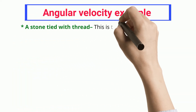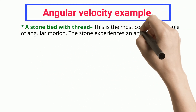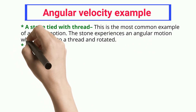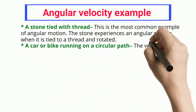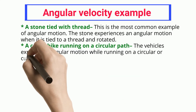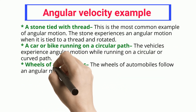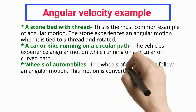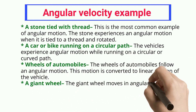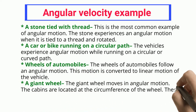Stone tied with thread: this is a common example of angular motion — the stone experiences angular motion when tied to a thread and rotated. Car or bike on a circular path: vehicles experience angular motion while running on a circular or curved path.